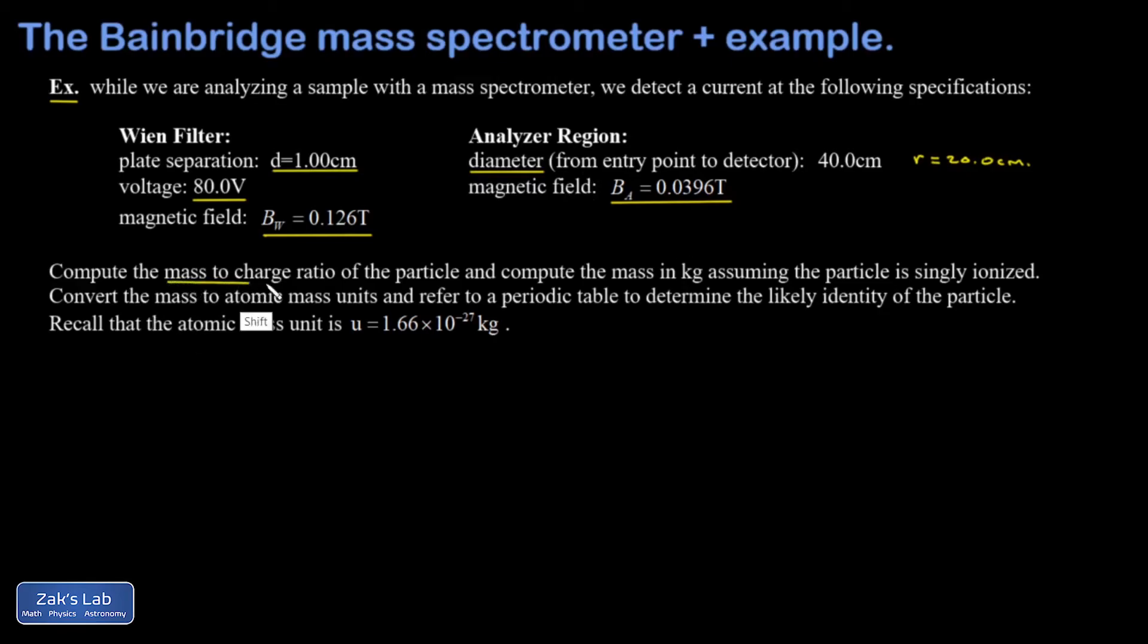We're asked to compute the mass-to-charge ratio of the particle. So let's get that done first. In quoting our formula for the mass-to-charge ratio, I need the radius of curvature, I need the magnetic field in the analyzer region, and I need the particle speed. Well, I've still got to figure out the particle speed. And that's nailed down very precisely by the Wien filter. That's given by the electric field over the magnetic field in that velocity selector.